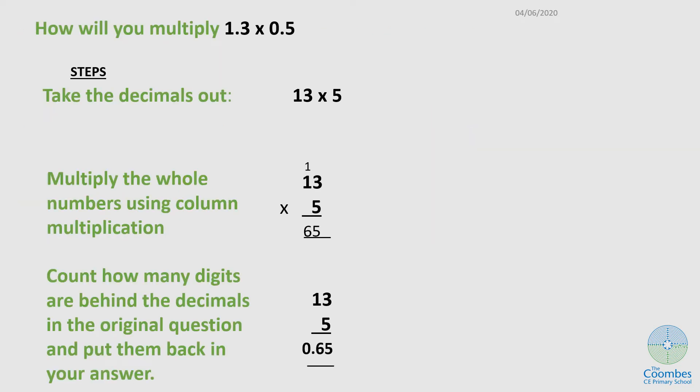Now how are we going to multiply 1.3 times 0.5? There are some steps we'll go through. First, take out the decimal point and write it as 13 times 5.